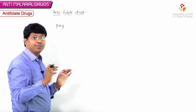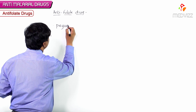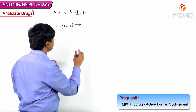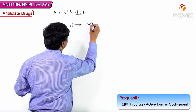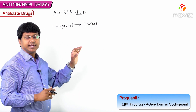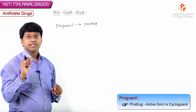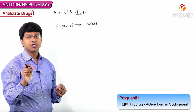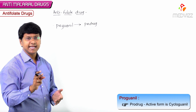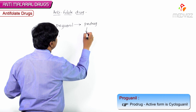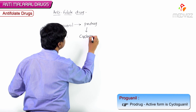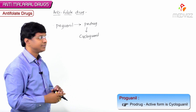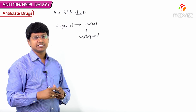One of the anti-folate drugs is proguanil. Remember, proguanil is a prodrug, so it has to be converted into its active form. Proguanil, which is a prodrug, is activated to form what is called cycloguanil. So cycloguanil is the active form of proguanil.